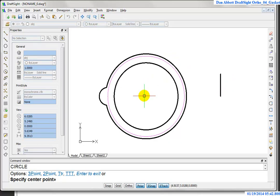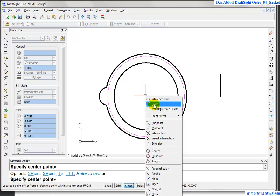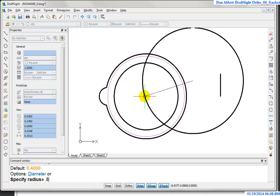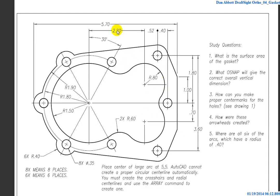Now I draw another circle. I hold the Shift key and right-click to do an override object snap, selecting 'From' — starting from that center point. Going at 2.2 comma 0.7, I draw a circle with a radius of 0.8. That arc is defined by the 2.2 coming from the horizontal dimension and the 0.7 from the vertical. Using the 'From' option allows me to locate the center of that circle relative to the point I picked. I'll use it again: 0.52 over and 1.1 up, which is 1.8 minus 0.7.